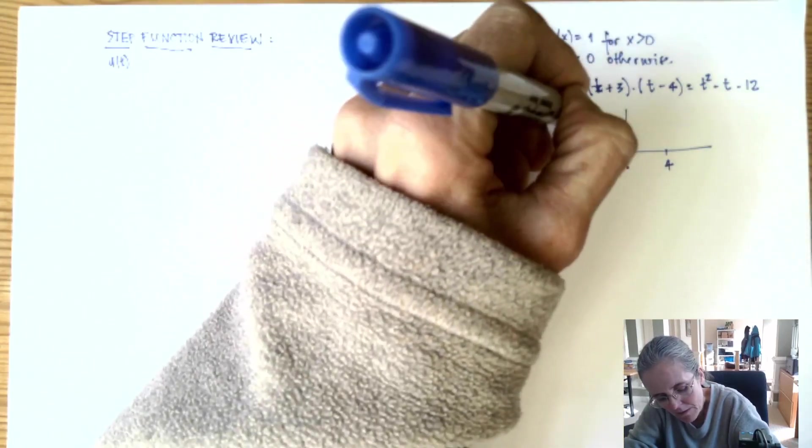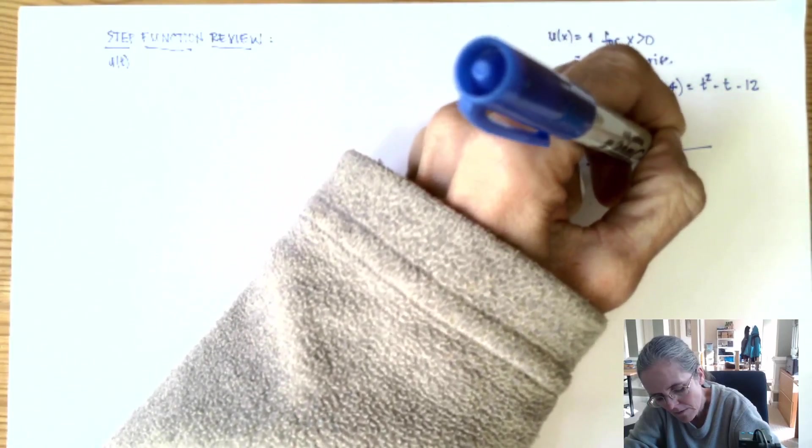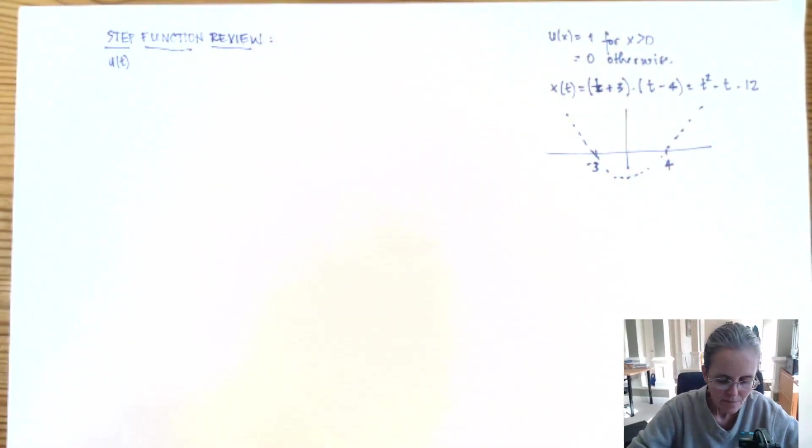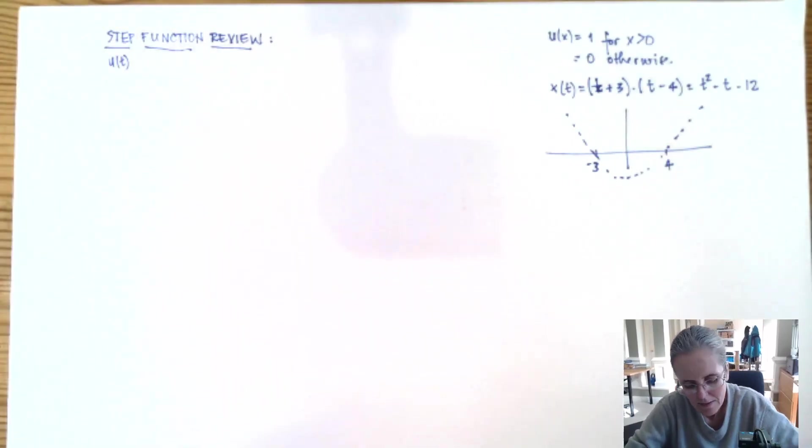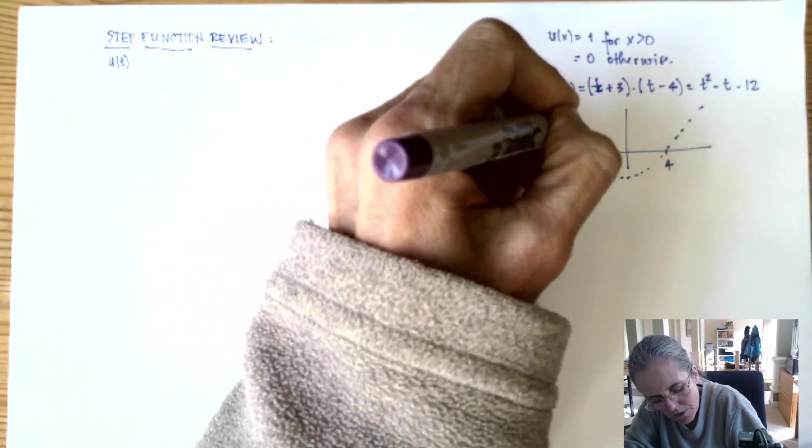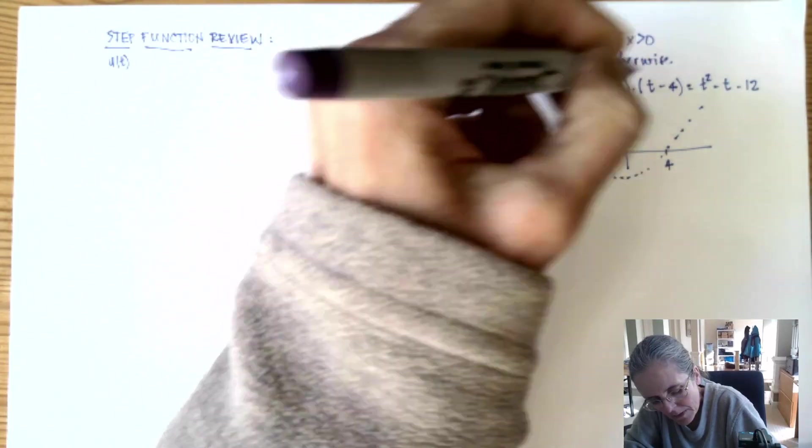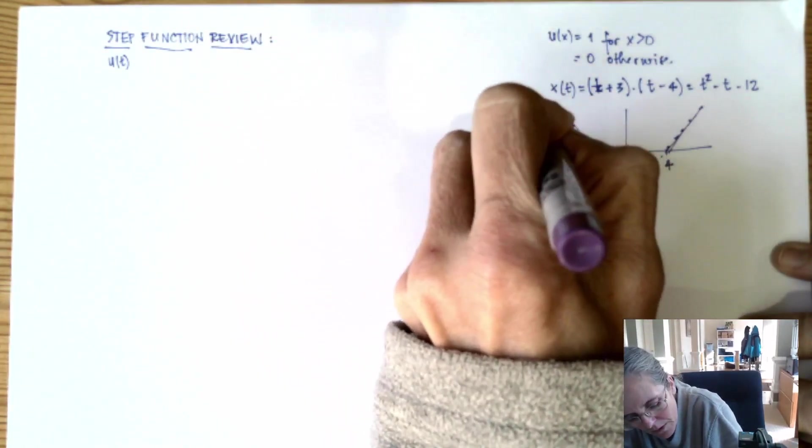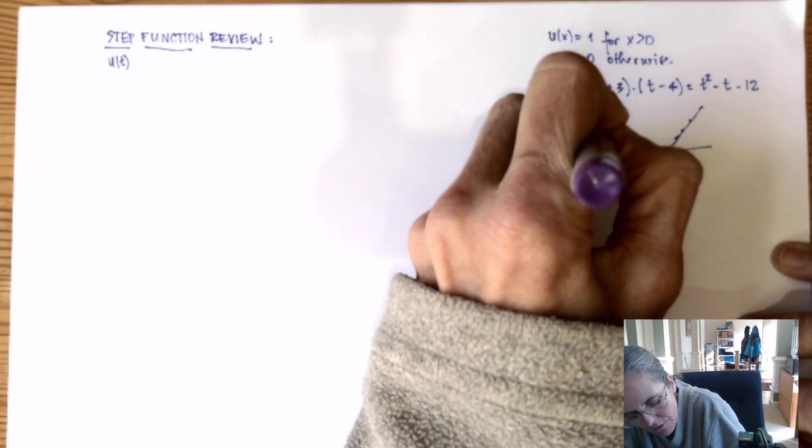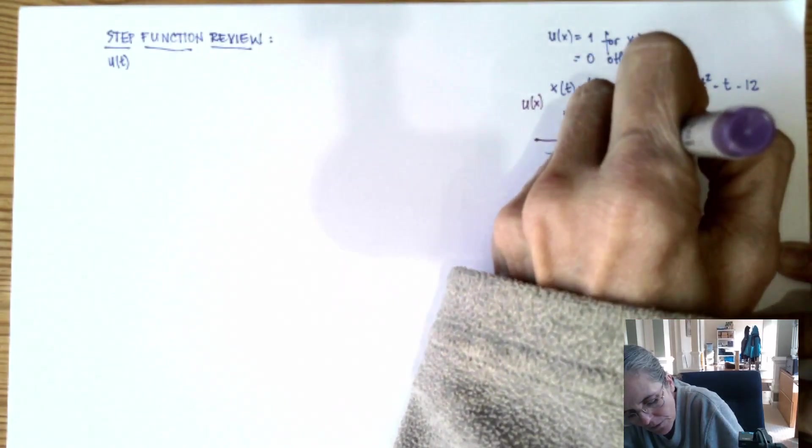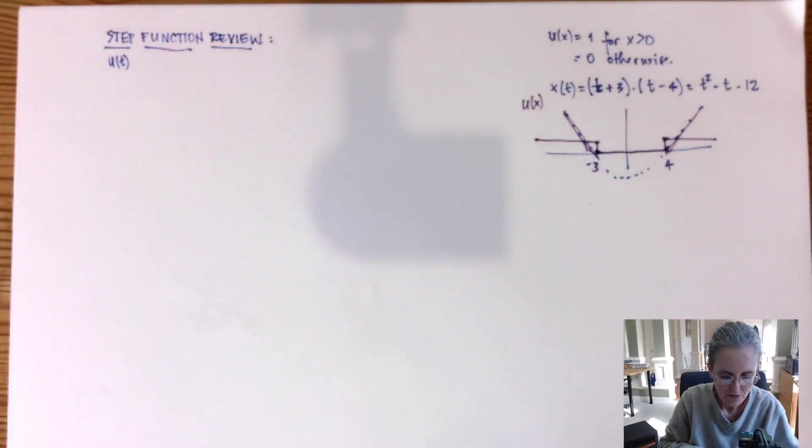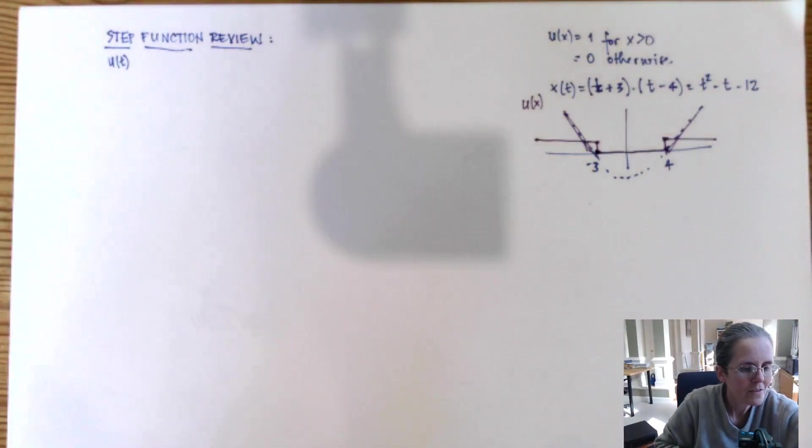This would be a parabola. Every area here where this function is larger than zero, which is here where I'm painting, the u of x which I'm going to draw in purple will be one. Then at minus three it goes to zero and then at four it goes back to one.